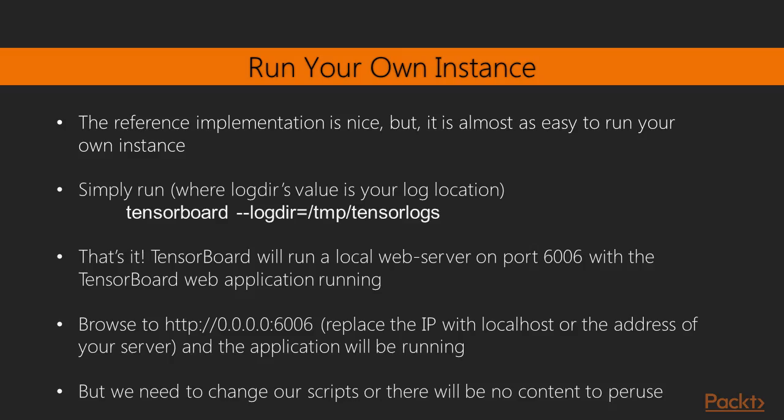Now if you want to run your own TensorBoard instance on your local machine, you just run the command: tensorboard --logdir=/tmp/tensorlogs. The location /tmp/tensorlogs is the folder where the TensorBoard logs are stored. We'll talk about what these logs are and how we can store them ourselves. After running the command, go to the URL http://localhost:6006, and you'll see an instance of TensorBoard running on your browser. It can't get any easier than this. Feel free to play around with the interface.